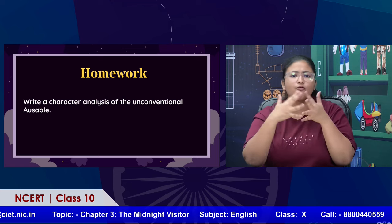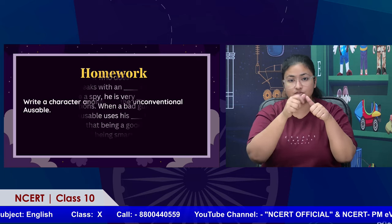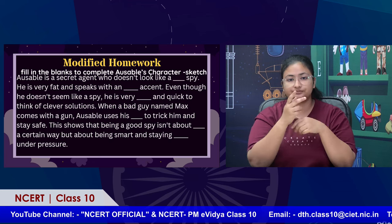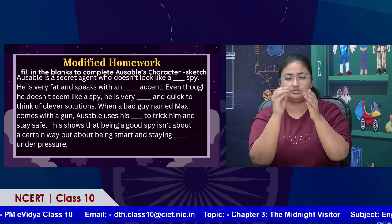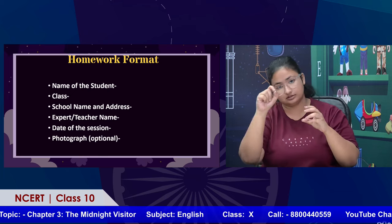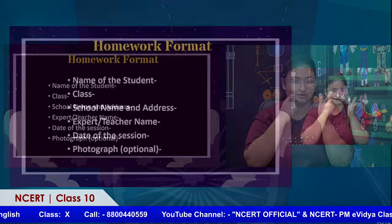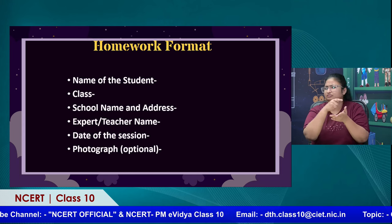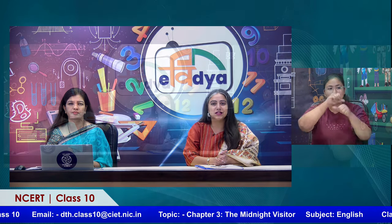For homework, students are to write the character analysis of the unconventional Ausable. For our challenged students, the modified version is a fill-in-the-blanks character sketch. Students can send this homework in the specified format: write your name, class 10th, your school's name and address, the expert's name — Dr. Rajni Jemini — the date of this session, 18th June 2024, and optionally a photograph. Please send your homework to dth.class10@ciet.nic.in.